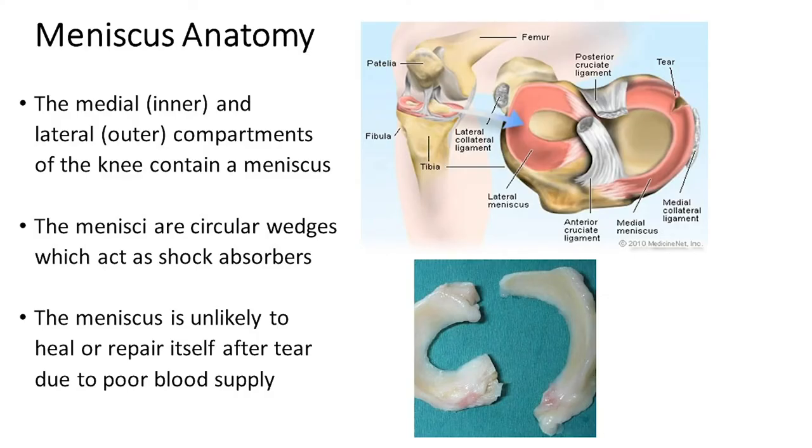The menisci function as shock absorbers — really to distribute pressure evenly throughout the knee joint. When part of the meniscus is missing or torn, that can cause symptoms and long-term increased pressures on the cartilage, leading to arthritis. Because the meniscus sees such huge loads and large blood vessels would be crushed, it is largely avascular with very limited ability to heal on its own, so a symptomatic tear may require surgical intervention.